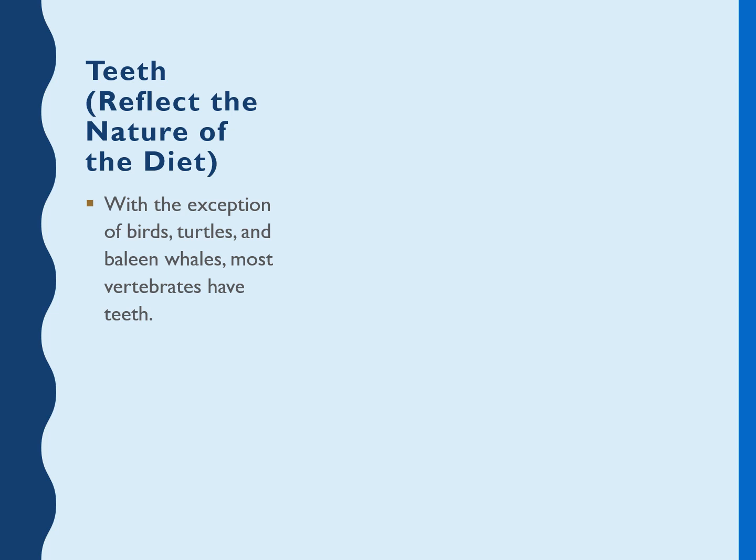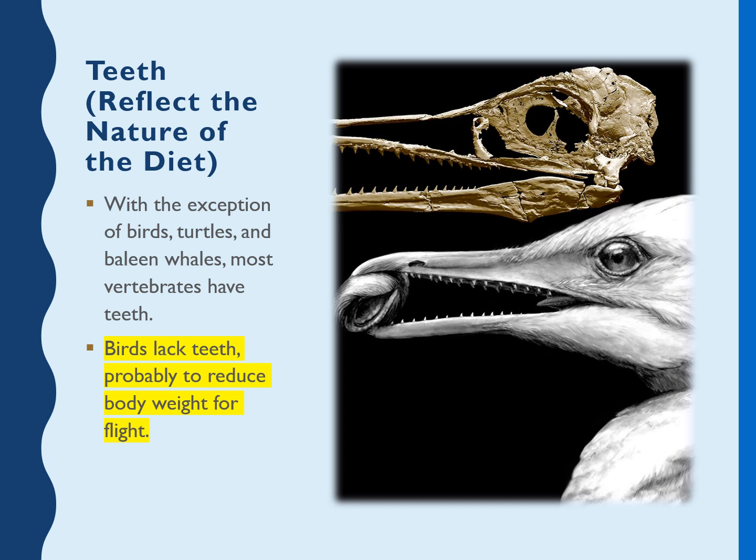Majority of vertebrate groups have teeth, with the exception of birds, turtles, and baleen whales — teeth are absent in these. Birds lack teeth probably to reduce weight for flight. Modern birds' ancestors had teeth. Modern birds have curved beaks and a hearty digestive tract that helps them grind and process food. Their gizzard handles mechanical digestion.